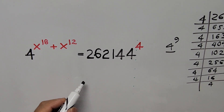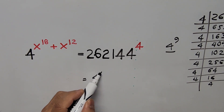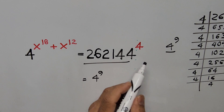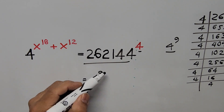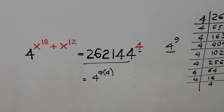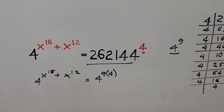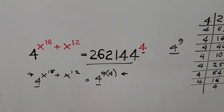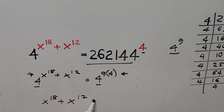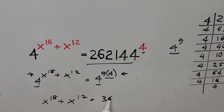Going back to our equation, the right-hand side is now 4 to the power of 9, and since we had an existing exponent of 4, that gives 4 to the power of 9 times 4, which is 36. The left-hand side remains 4 to the power of x^18 plus x^12. Since both sides now have the same base, we equate the exponents: x^18 + x^12 = 36.